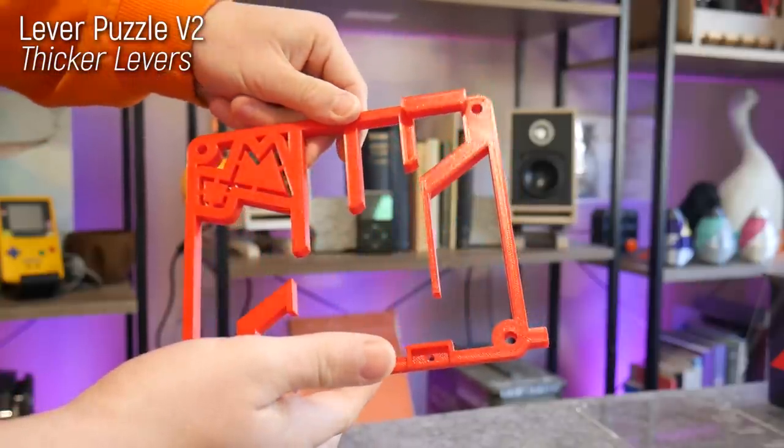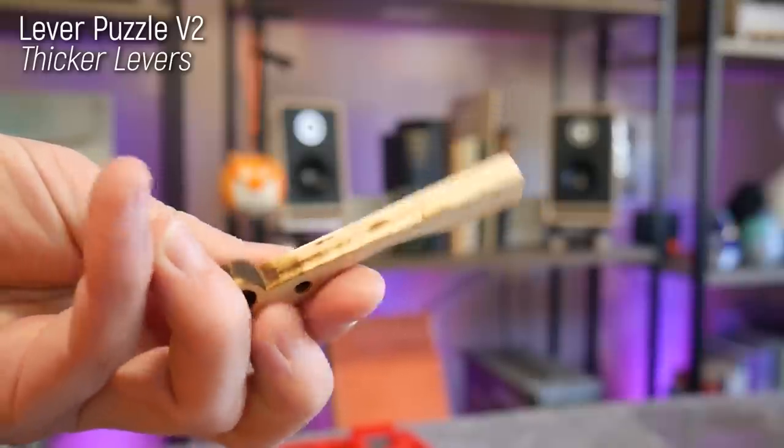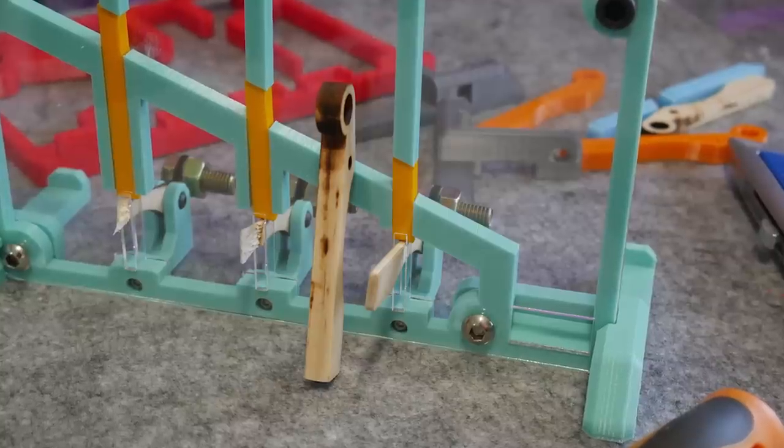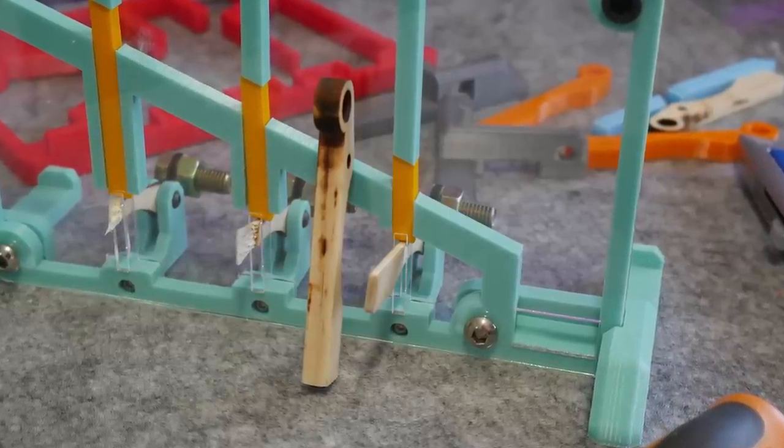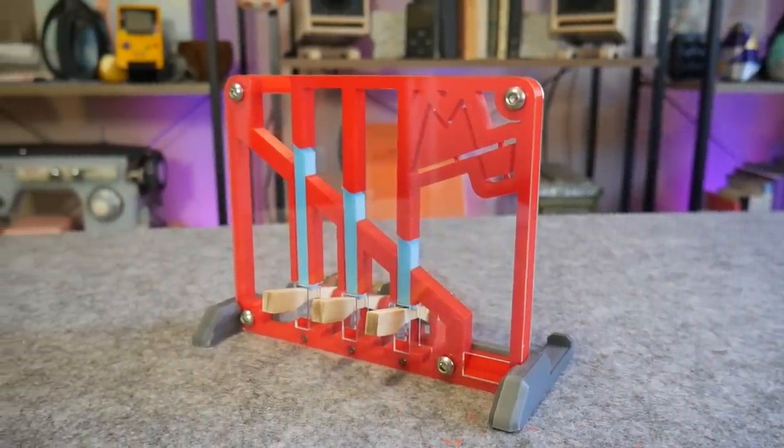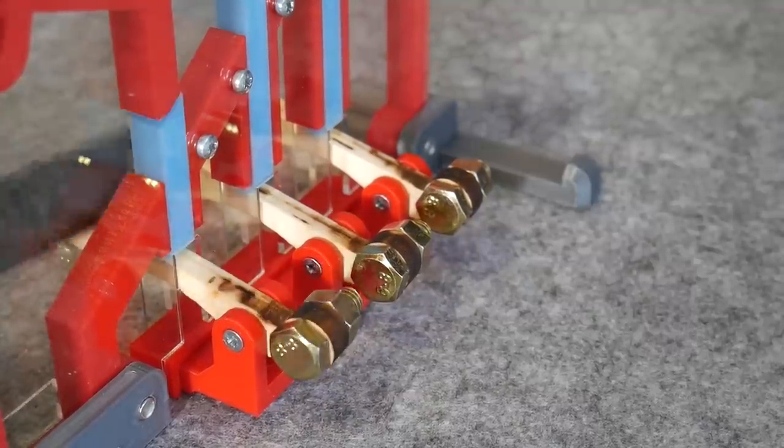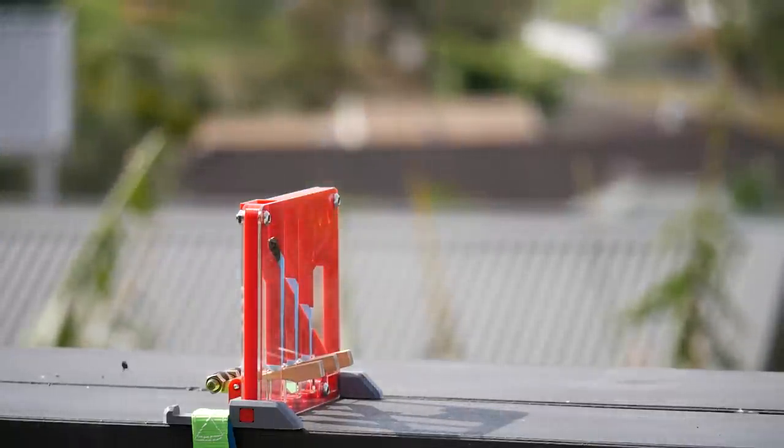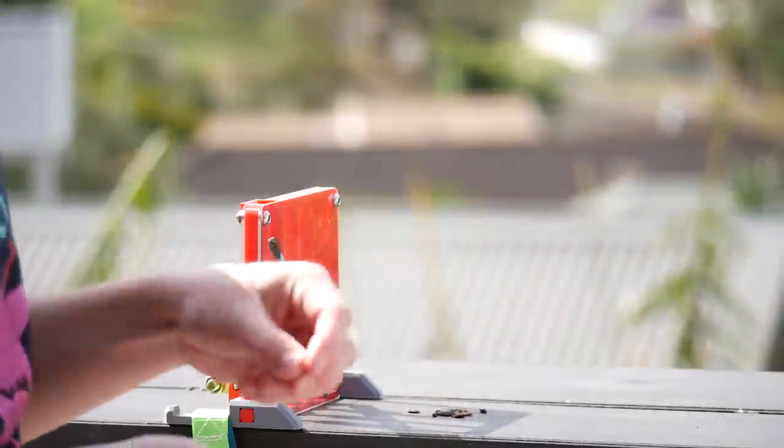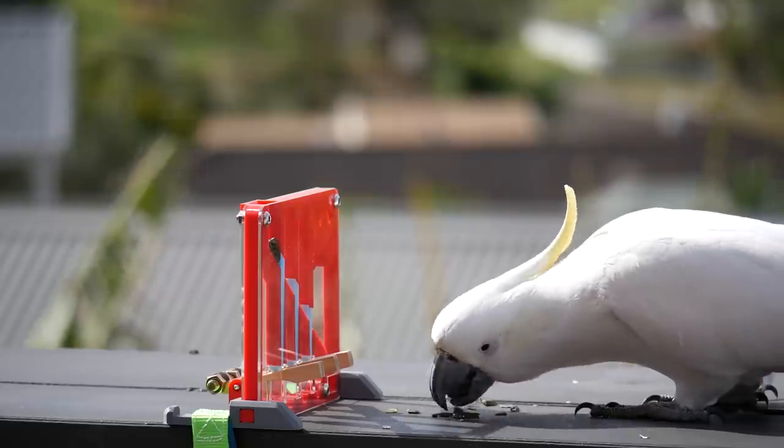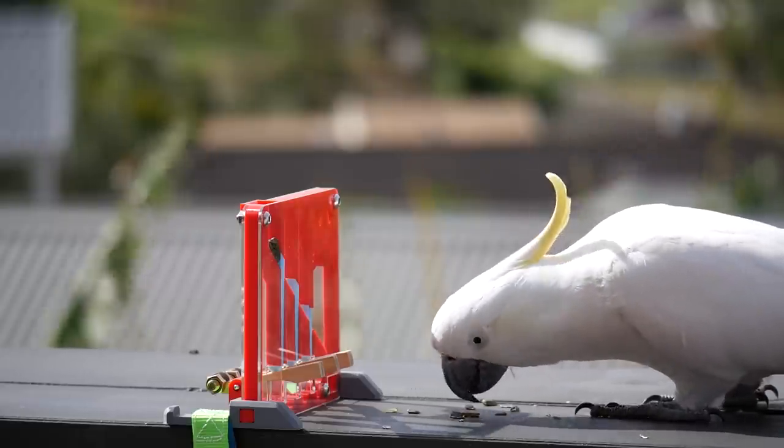So back to the drawing board. Version 2 is beefed up in every way with a thicker cross section and new 10 millimeter thick pine levers which hopefully should be a little bit more durable. But the new design should be able to withstand the curious abuse a little better. I also sourced a way more secure strap so the puzzle is more secure than ever. So after placing a few tempting seeds in front of the puzzle, I left Popeye to figure out this new challenge.